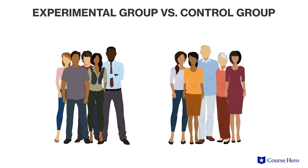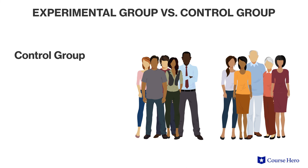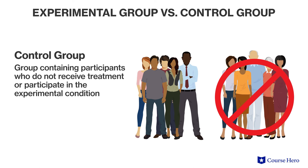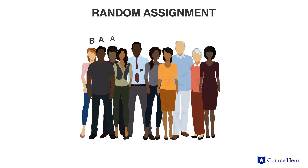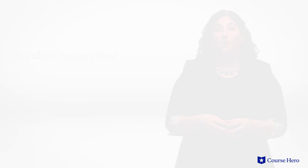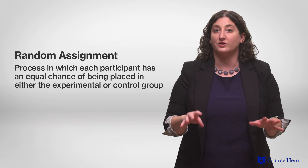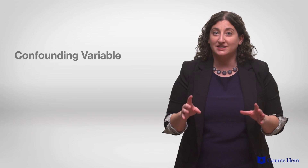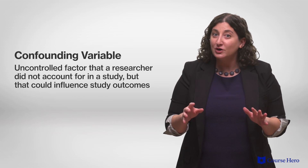The independent variable is often specified using experimental and control groups. The experimental group contains participants who receive treatment or participate in the experimental condition, while the control group contains participants who do not. Researchers use random assignment — where each participant has an equal chance of being placed in either group — to minimize the impact of confounding variables: uncontrolled factors that researchers did not account for but that could influence study outcomes.